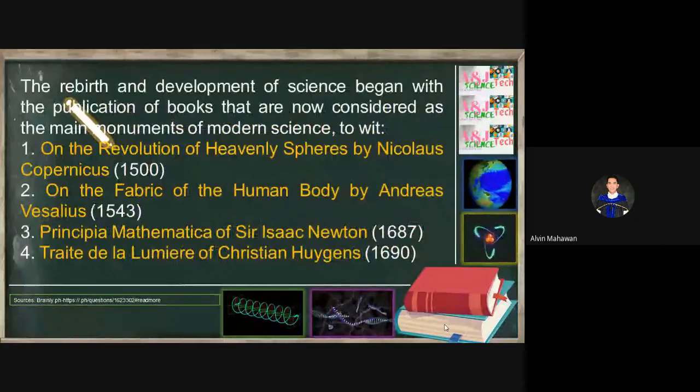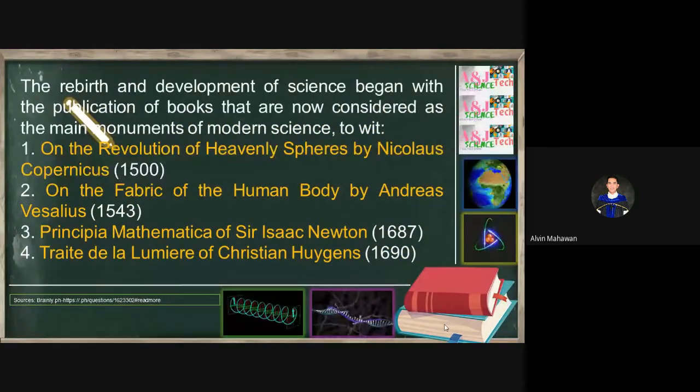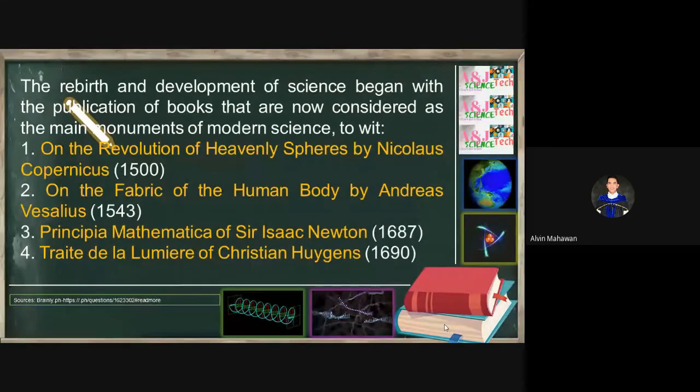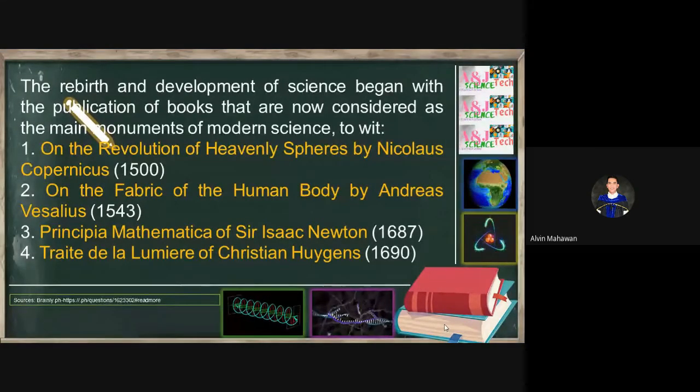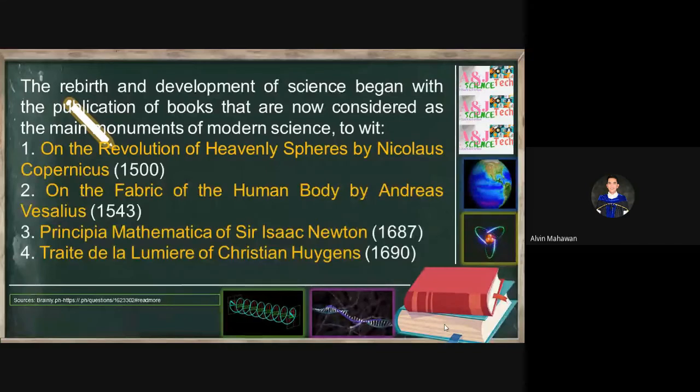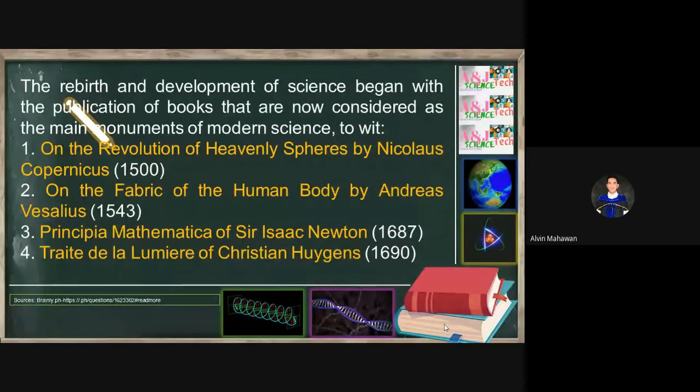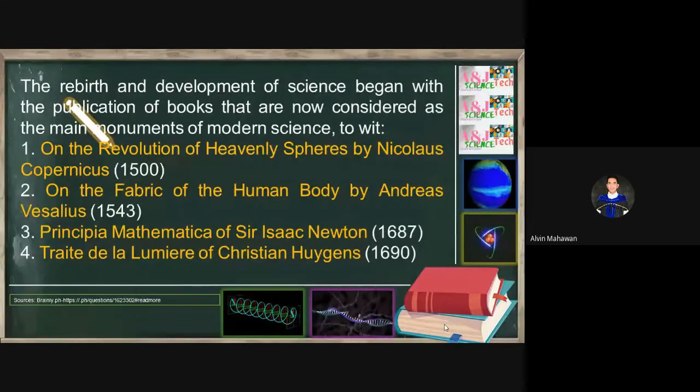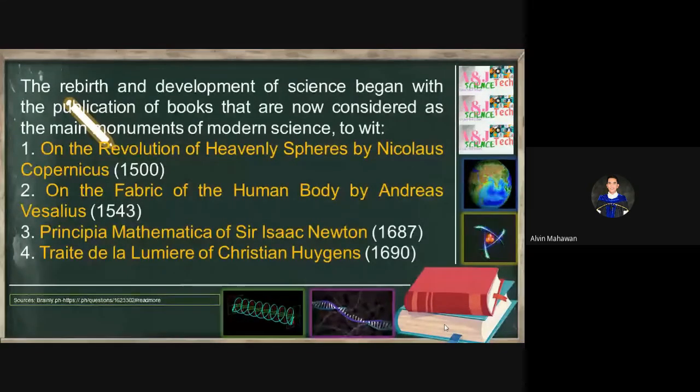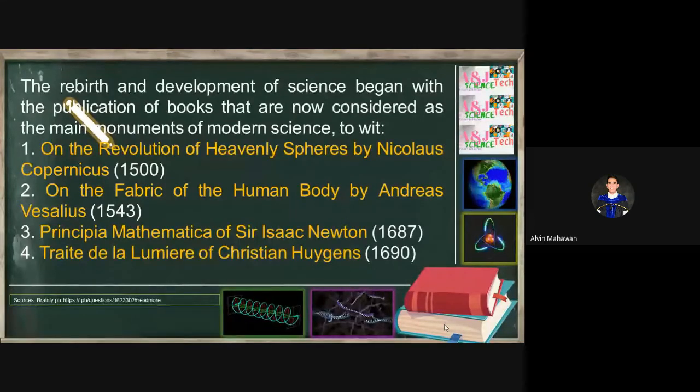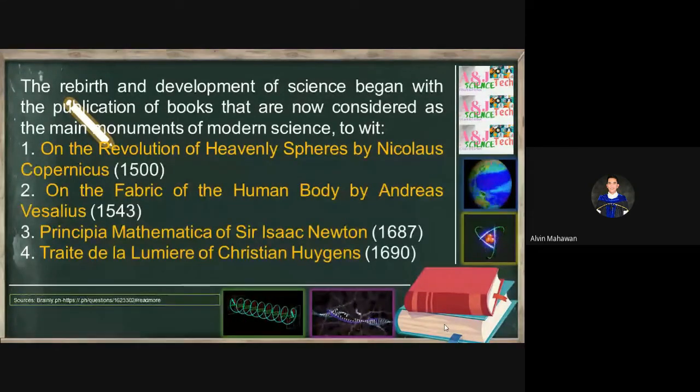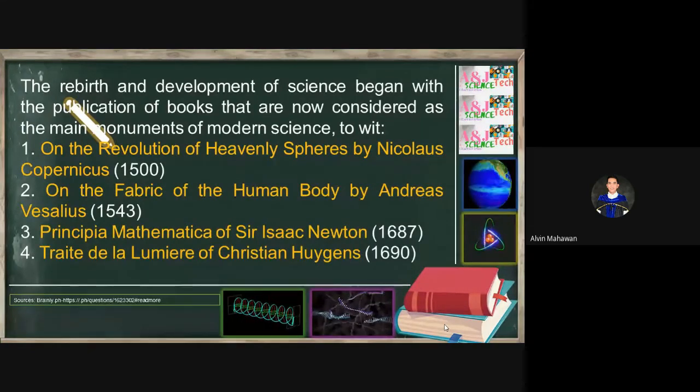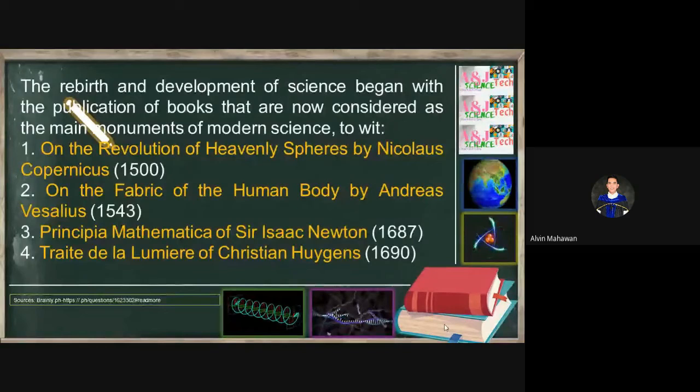The rebirth and development of science began with the publication of books that are now considered the main monuments of modern science. Imagine these are actually the main monuments. In other words, these are really the foundation because recent advancement, recent body of knowledge being discovered, are just pieces of what have been established before in modern science. First is On the Revolution of Heavenly Spheres by Nicolaus Copernicus. Second is On the Fabric of the Human Body by Andreas Vesalius, anatomy and physiology. Principia Mathematica of Sir Isaac Newton. Traite de la Lumiere of Christian Huygens.